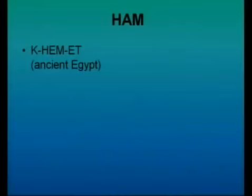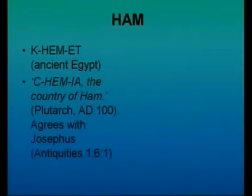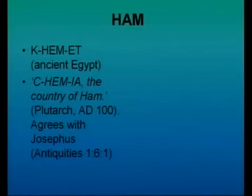Let's look at Ham. His descendants spread into Africa, and parts of ancient Egypt were known as Kemet — obviously a derivation from Ham. We find from the pagan historian Plutarch in the first century AD that he refers to Chemia as the country of Ham. So in the ancient world it was very well known that Ham and his descendants had spread into Africa, which agrees exactly with what Josephus, the first-century Jewish historian, speaks about.